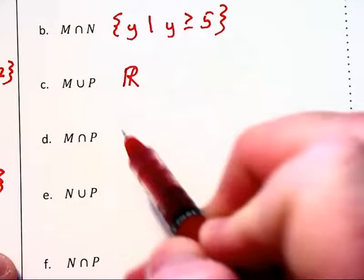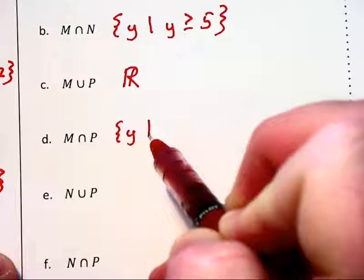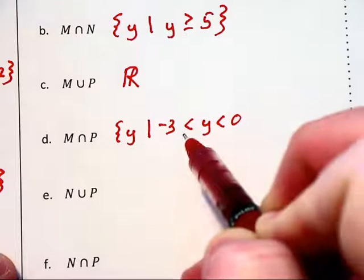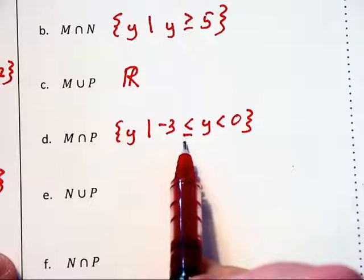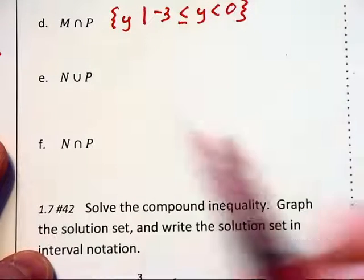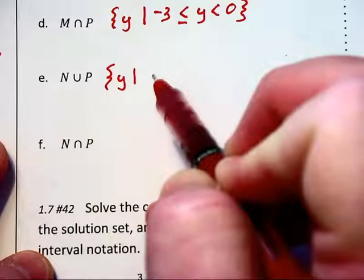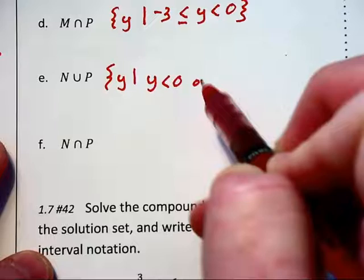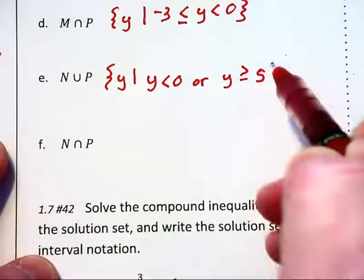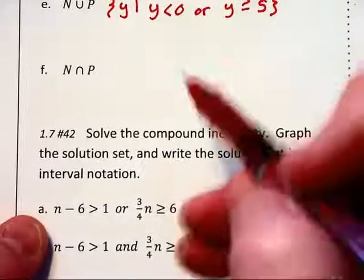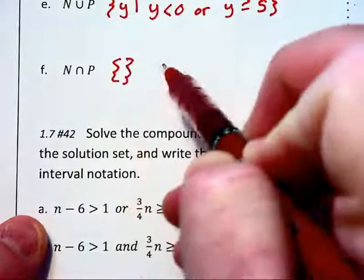Their intersection in part D is going to be the set of all Y values between negative three and zero. Since we are including negative three, we have an equal sign on that portion of the inequality. For part E, joining N and P together gives a two-part answer: the set of all Y such that Y < 0 or Y ≥ 5. When you look at sets N and P, there is no intersection between them, so their intersection is the empty set or the null set.